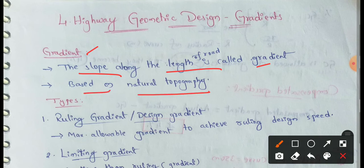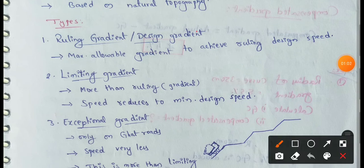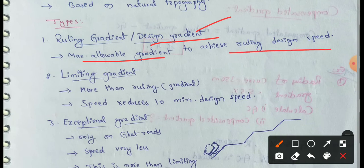This gradient is based on natural topography — the slope value is determined based on natural topography. Now, types of gradient: there are 4 types. First one is ruling gradient, also known as design gradient. Ruling gradient is the gradient to achieve ruling design speed. Up to the maximum allowable level for that ruling design speed, that gradient is called ruling gradient.